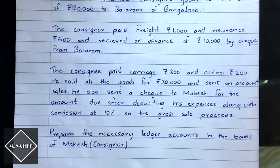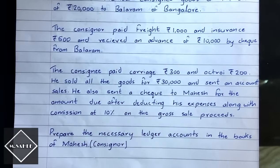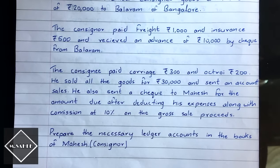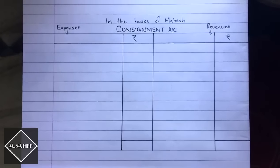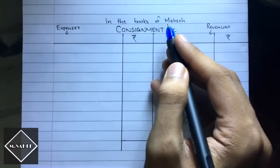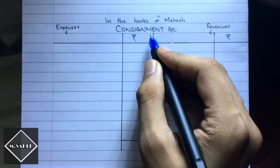We need to prepare the necessary ledger accounts in the books of Mahesh the consigner. We will prepare three accounts: first, the consignment account; second, the consignee account; and third, the goods sent on consignment account. The consignment account is similar to a trading and P&L account.